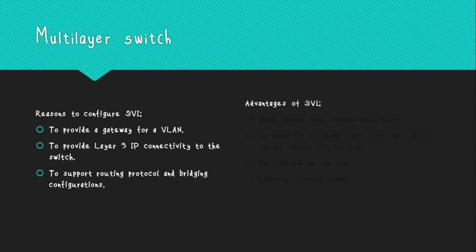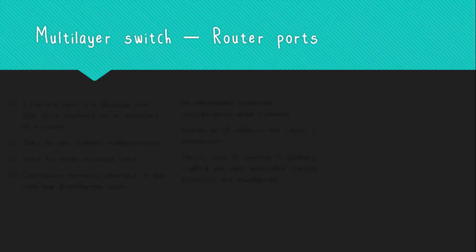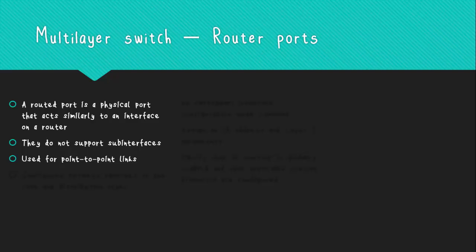The advantages of using SVIs are that they are much faster than router on a stick, as they use multiple interfaces to connect different VLANs. There is no need for external links from the switch to the router for routing, no limitation to one link, and latency is much lower because traffic does not need to leave the switch to reach its destination. Another type of Layer 3 port is the routed port — a physical port that acts similarly to an interface on a router. It is not associated with a particular VLAN, and Layer 2 protocols such as STP do not function on a routed port, but some protocols function at Layer 3.